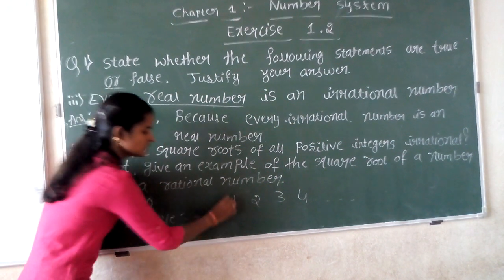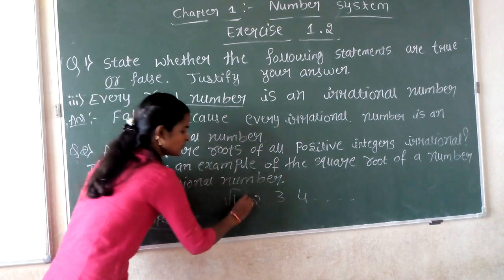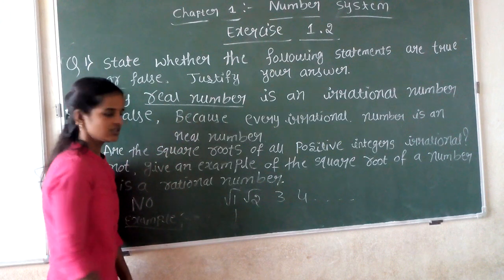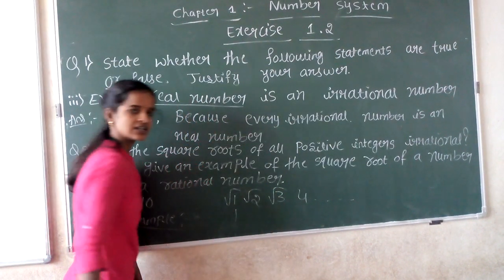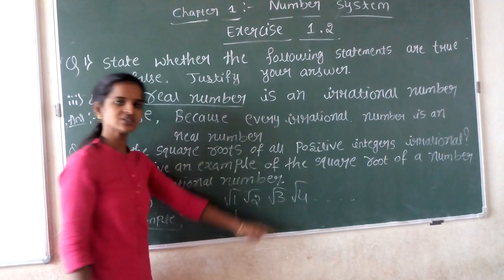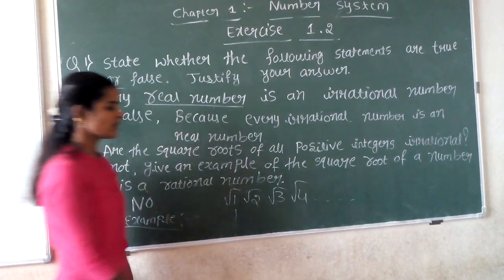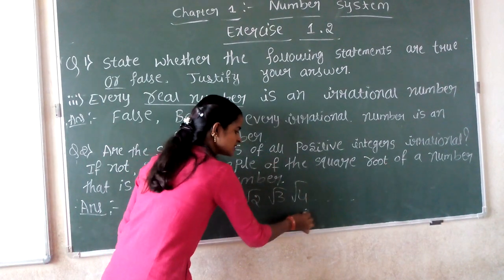Here, square root of 1 is 1. Square root of 2 is irrational. Square root of 3 is also irrational. But square root of 4 is not irrational because square root of 4 is a perfect square. Yes, square root of 4 will be 2.